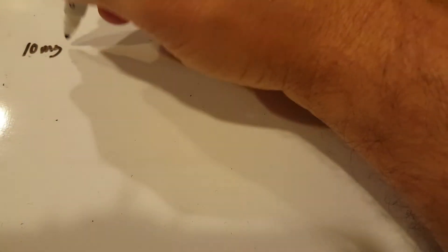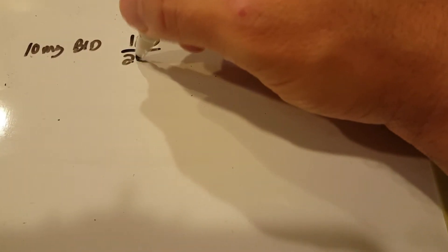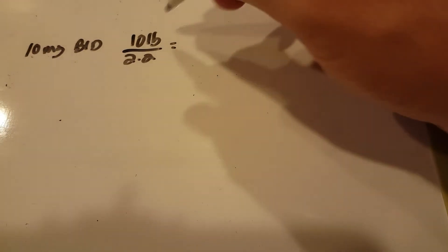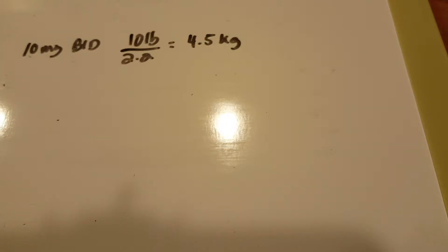Starting out with my 10 milligrams BID for my 10-pounder, I need to divide by 2.2, and that's going to be 4.545454. So you can round that to the nearest tenth, 4.5 kilograms.